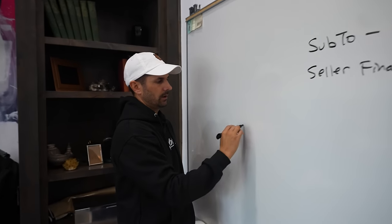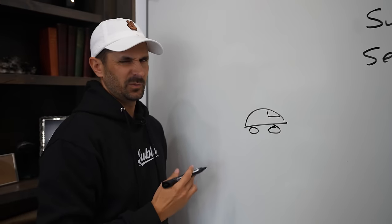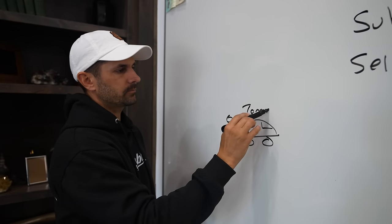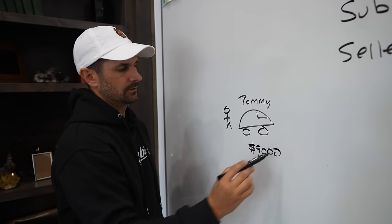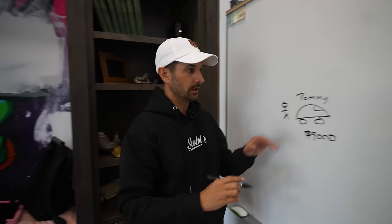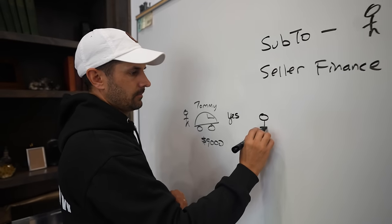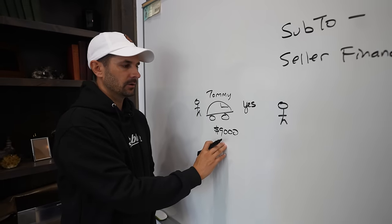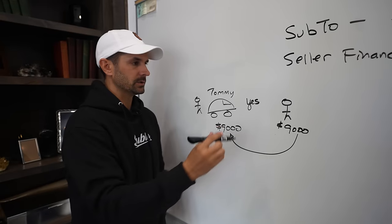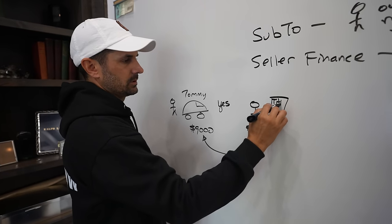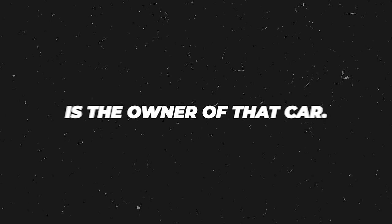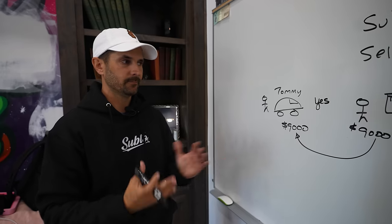If I go buy a car from a guy named Tommy — his car is on Craigslist for $9,000 — I could call him and ask if he has the title. He says yes. I bring $9,000, give it to Tommy, and in return he gives me the ownership papers, which in a car is called the title. Now I have the title, which means I'm the owner. The person who has title in their name is the owner of that car. Pretty simple — it's a simple transaction.